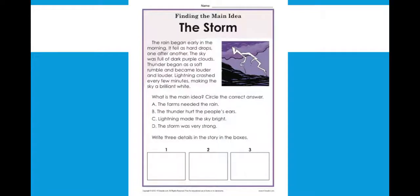So let's look at our answer choices. A and B, while they might be true, are never mentioned in this story. They say nothing about a farm, even though we know farms do need rain. It's not talked about up here. The thunder hurt people's ears. We know that the thunder is loud, but again, that's only a small piece of the story. So we're between C and D. What do we think it is? If you said D, the storm was very strong, you would be correct. Because that is what every sentence in here is about. It all goes back to the storm.